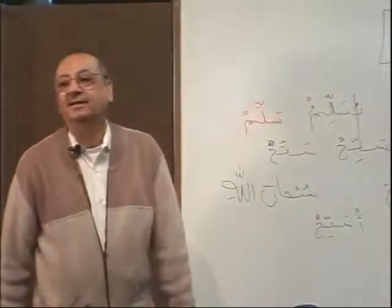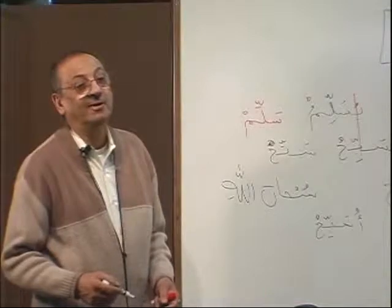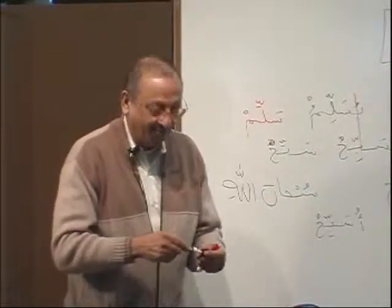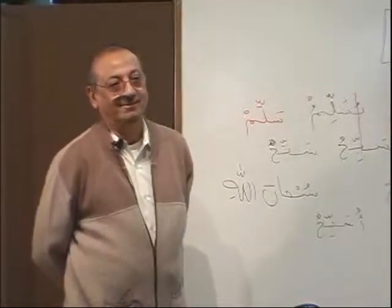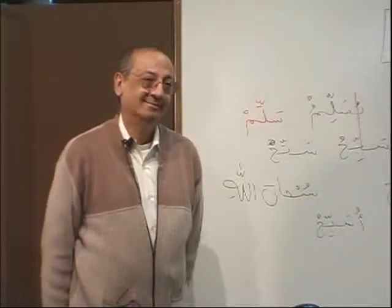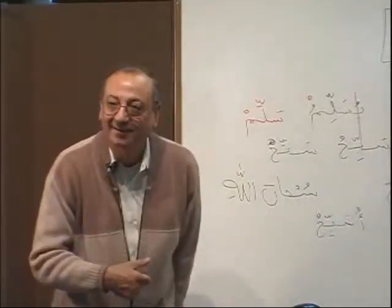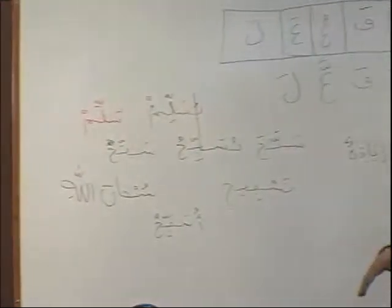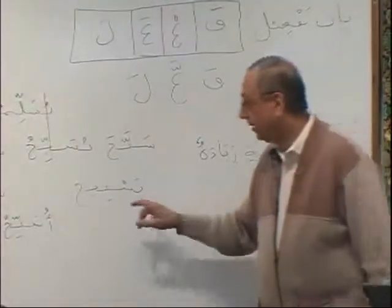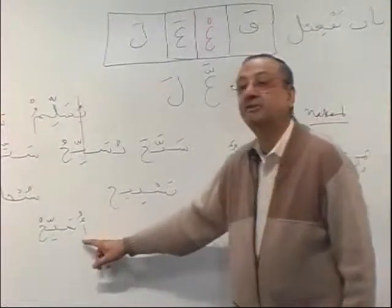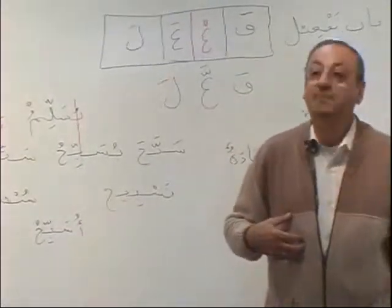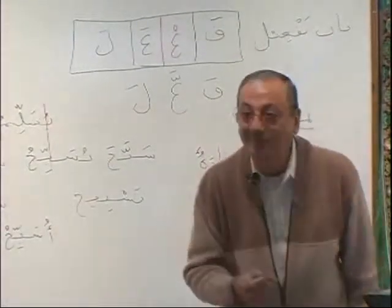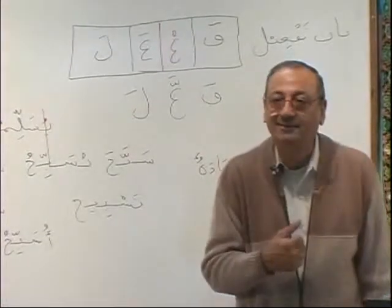The verb is usabbihu — I glorify Allah. So when you say subhanallah, I must make it mansoob: subhana — maf'oolun mutlak — and it is a mastar. This mastar is used instead. When we study maf'oolun mutlak in greater detail, we will understand why and how. The verb is usabbihu — I keep His name high and above from what people are associating with Him. That is the meaning of subhanallah: usabbihu subhana Allah.